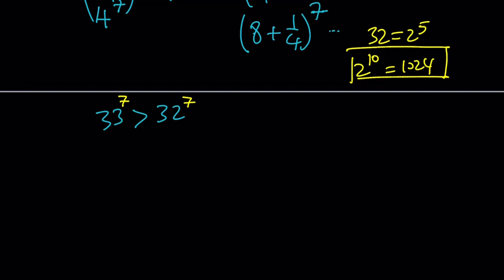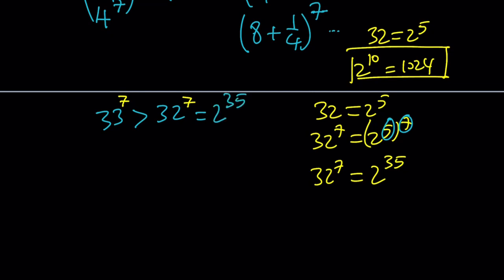So from this point on, what can I do? Well, since 32 is 2 to the fifth, I can just raise both sides to the seventh power. And this is what I'm getting. So 32 to the seventh power is the same as 2 to the power of 35. Because you're supposed to multiply the exponents. Now I'm going to go ahead and set it equal to 2 to the power of 35.